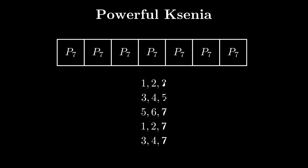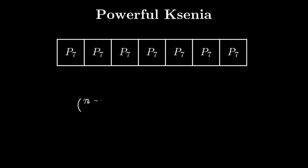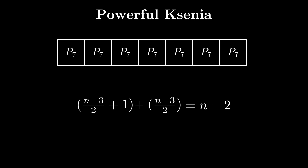The number of operations needed in the first part is (n-3)/2 + 1, where the 1 comes from the initial (1,2,3) operation. The number of operations needed in the second part is (n-3)/2. Therefore, (n-3)/2 + 1 + (n-3)/2 equals n-2 total operations.